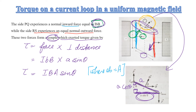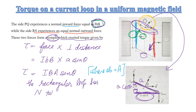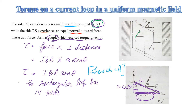Now, if the rectangular loop has n turns — suppose we add n clockwise turns in the magnetic field — then more work is done and more torque is produced. If there are n number of turns, then the total torque is n times the single-turn torque. Total torque = n I B A sin theta.